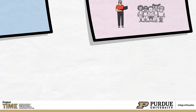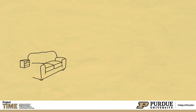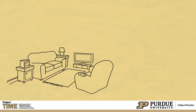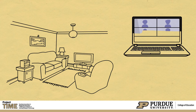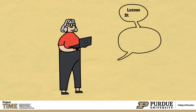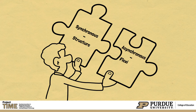Fourth, identify the need for flexibility. Consider the commitments or home situations of students that may hinder their ability to attend live synchronous video conferencing sessions. Teachers should consider if their chosen lesson structure or autonomy level is developmentally appropriate for the students. Synchronous learning often provides more structure for students, while asynchronous learning maximizes flexibility.